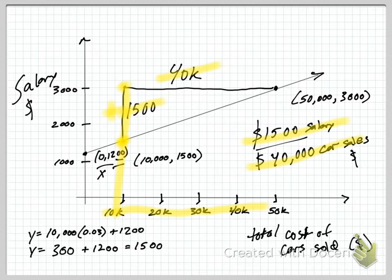And if you write your slope as a fraction, I'll repeat that. If you write your slope as a fraction and read it as a rate, that is the easiest way to interpret slope. So this reads, he makes $1,500 of salary for every $40,000 worth of cars he sells.